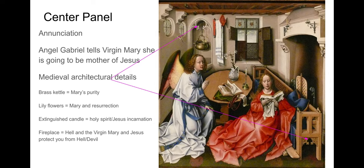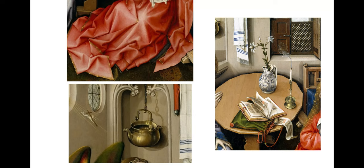The drapery shows dramatic folds and energy — a much more detailed and energetic presentation than the natural way drapery would fold in a more classical scene. Close-up views reveal spectacular attention to detail. Shadows are painted on the walls. That is truly the beauty of Northern Renaissance painting: oil painting with rich colors, vibrancy, and the reflection you can see in the brass kettle hanging in the background.